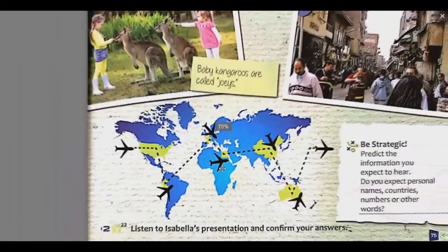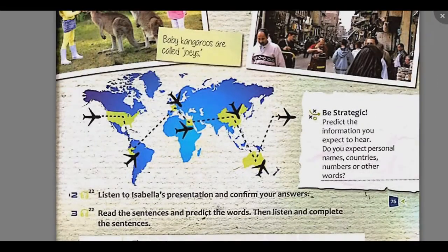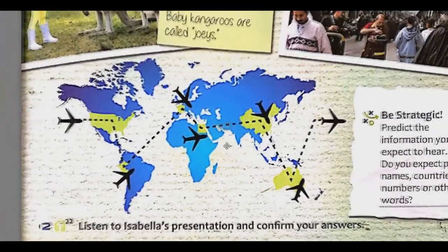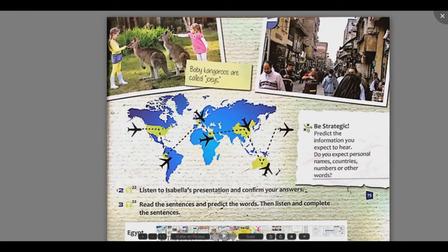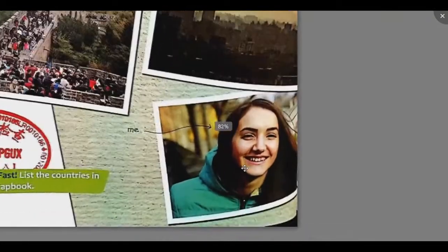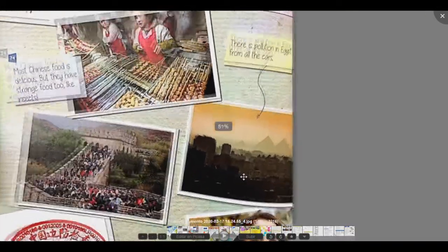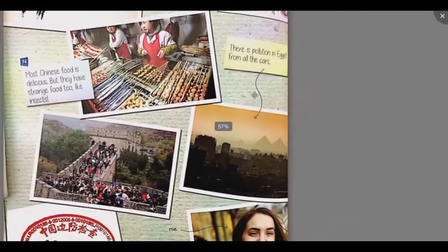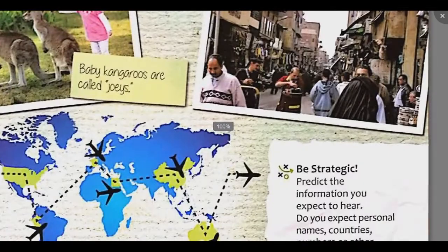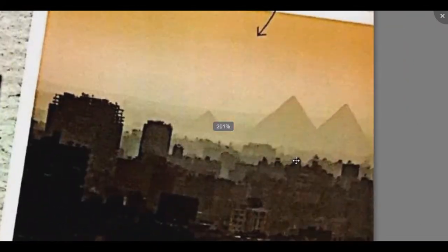¡Lo lograste! Excelente. Ahora escucharemos la presentación de Isabela para verificar nuestras respuestas. Track 22. In the second part of my trip, I was in three countries. First stop: Egypt — a very interesting country. The street markets were so noisy. Look at the picture of Cairo in my scrapbook. Can you see the pyramids in the background?